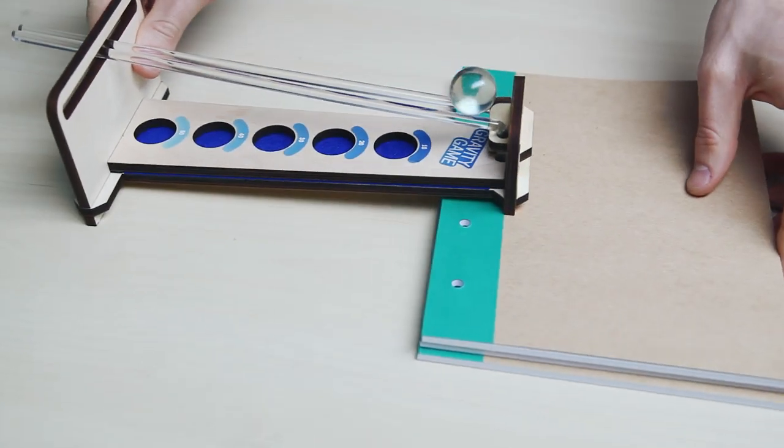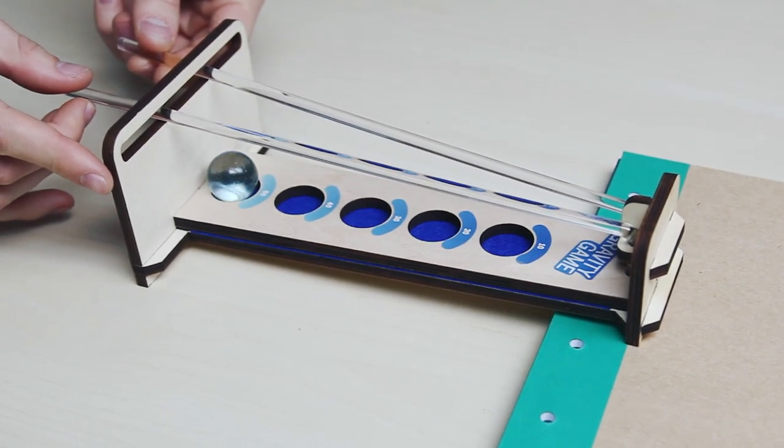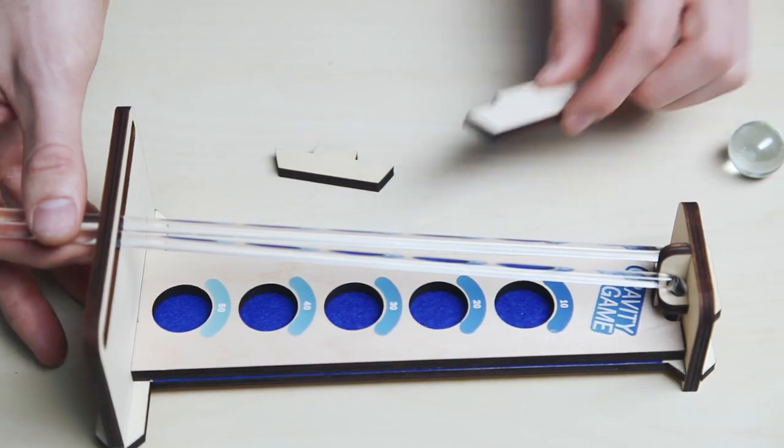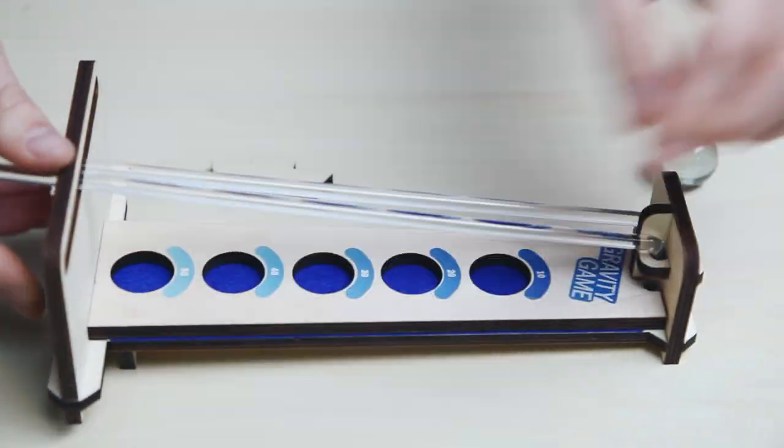Another way to make your game a little bit easier is to place a small notebook or book under the narrow end of your game. To make your game a little bit harder, use the extra laser cut pieces on the thick side of your board.